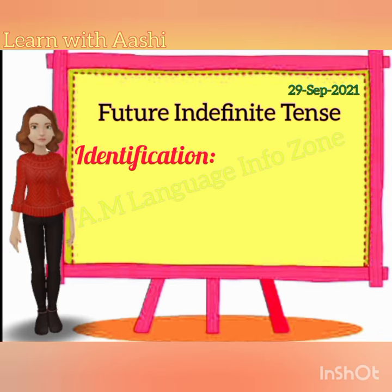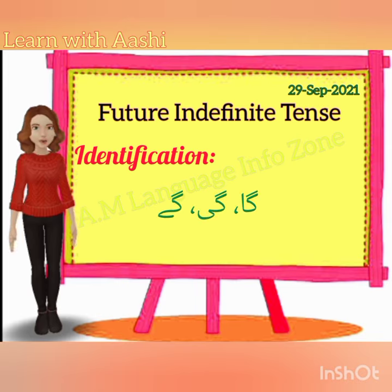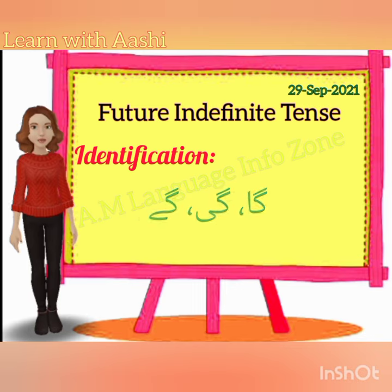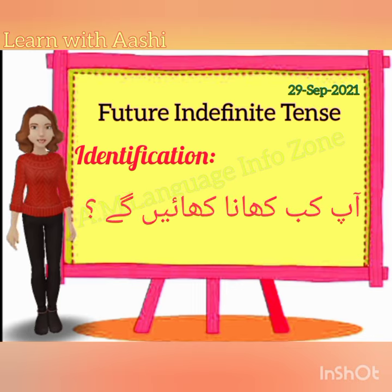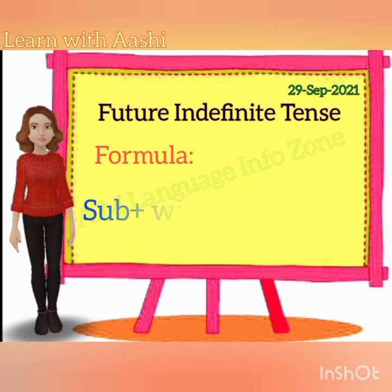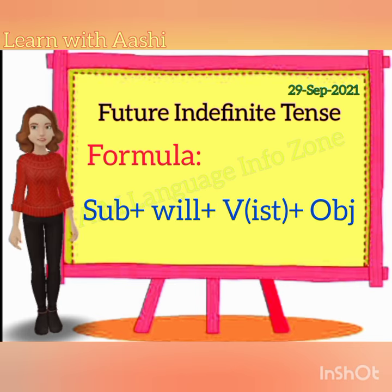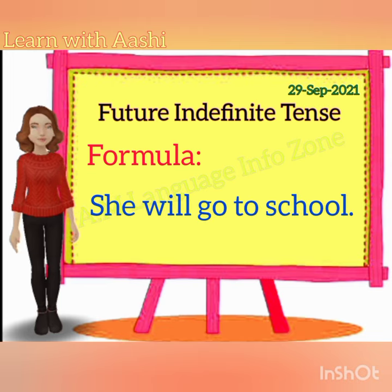The identification of future indefinite tense in Urdu/Hindi sentences is that they end with the words ga, gi, ge. For example: aap kab khana khayenge, woh skool jai gi. The formula is: subject plus will plus verb first form plus object. For example: she will go to school.